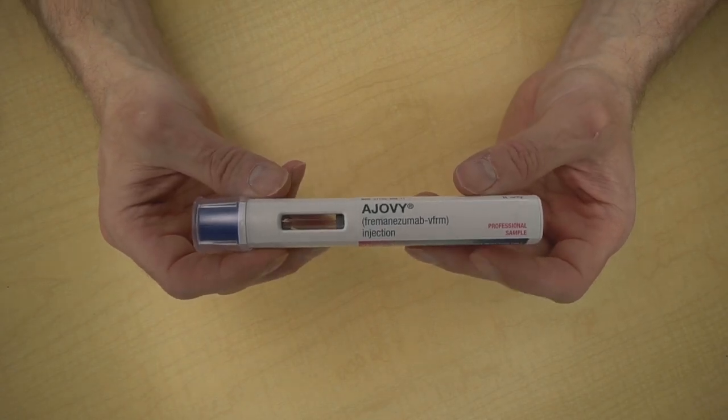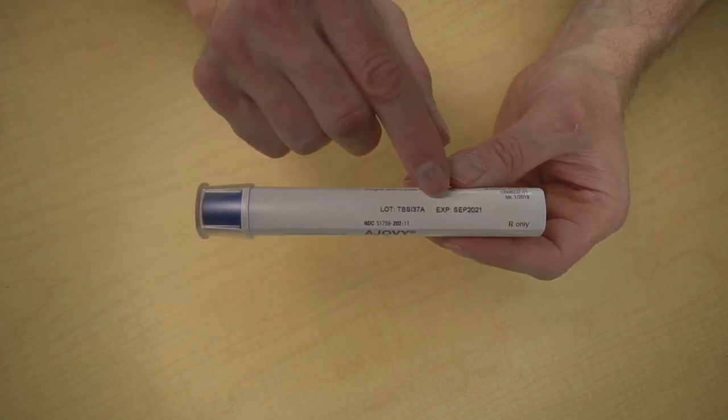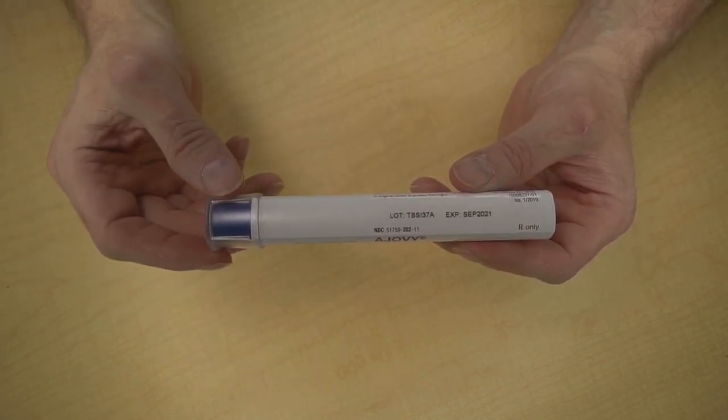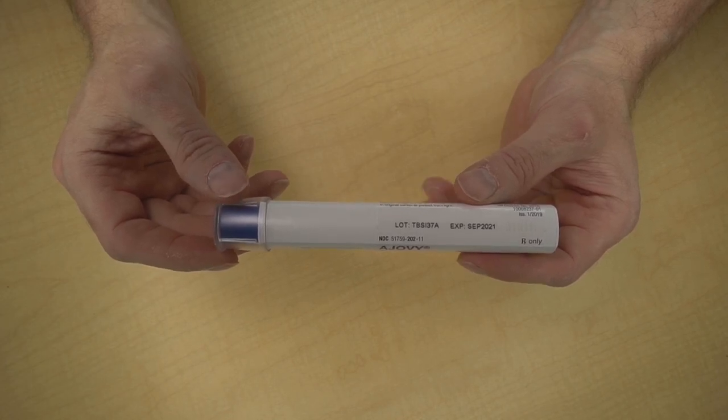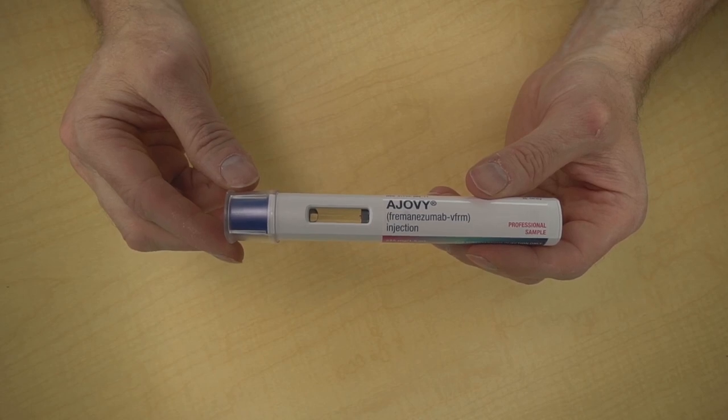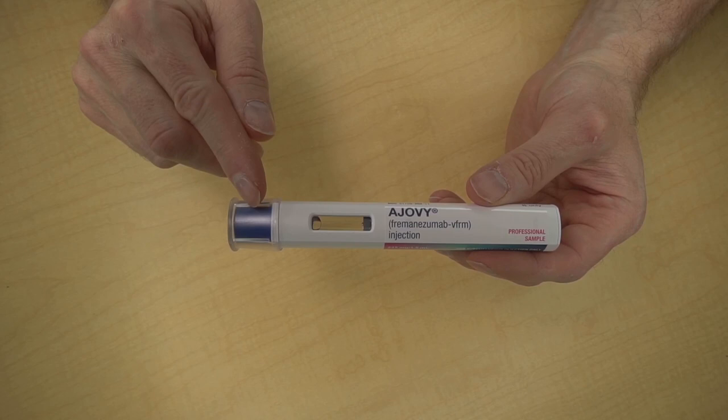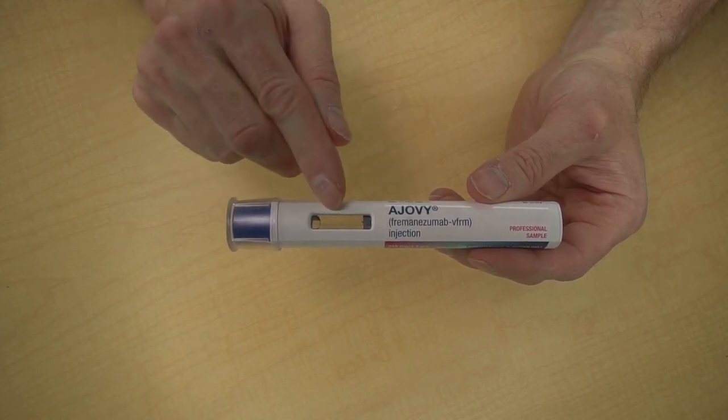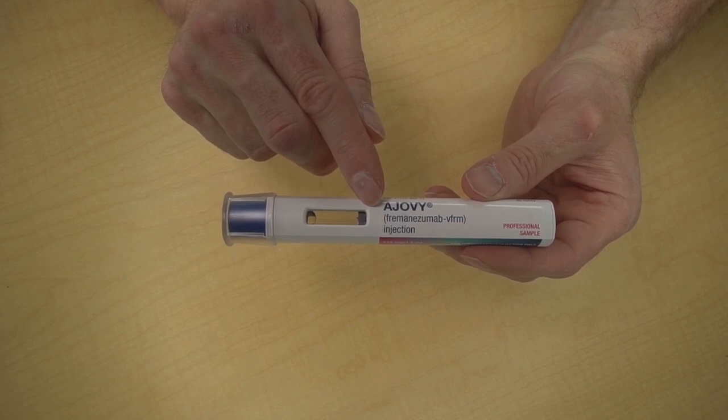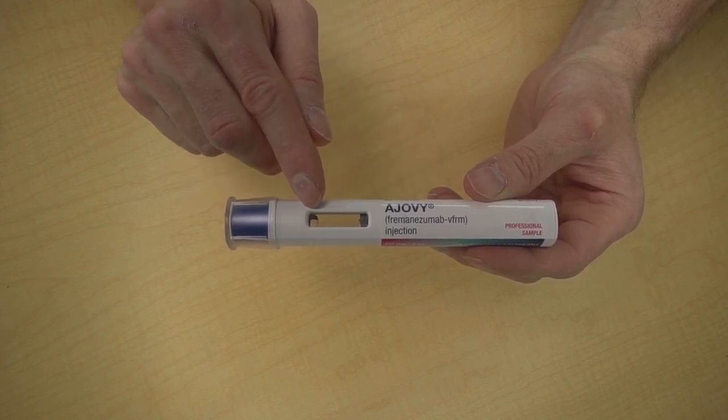Let's take a closer look at the Ajovi auto-injector. First of all, make sure it says Ajovi. Next, check the expiration date. In this case, it's September 2021. Don't inject expired medicine. This is the clear protective cap. You're going to remove the protective cap just before you inject the Ajovi. Underneath the protective cap is the blue needle shield. This is the viewing window. This is a gray stopper and it's attached to a blue plunger and it will move across the viewing window as you inject the Ajovi.